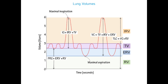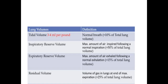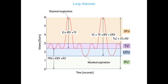Then we have expiratory reserve volume (ERV). This is the maximum amount of air exhaled after a normal quiet exhalation. Similar to inspiratory reserve volume but on the expiratory side — the volume after a normal quiet expiration. It accounts for about 15 percent of total lung volume, approximately 1200 ml.